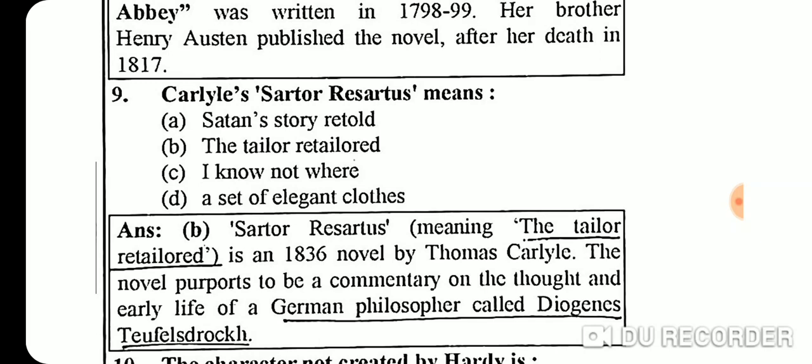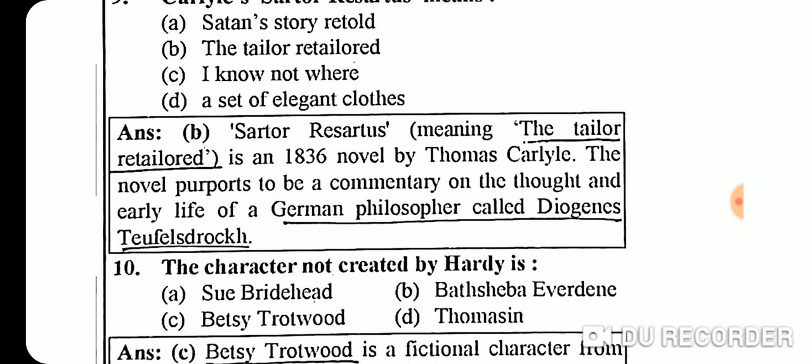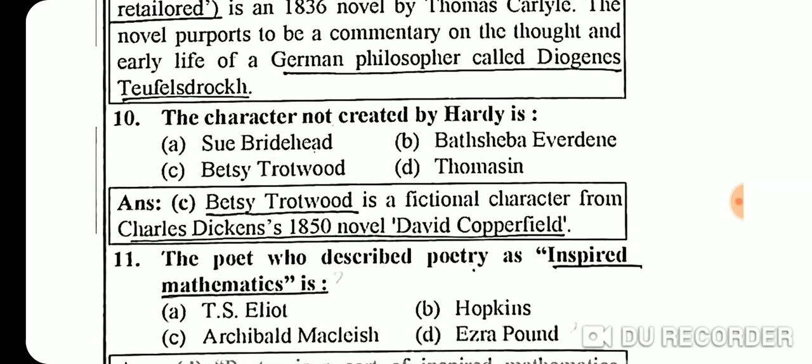Question 9: Carlyle's 'Sartor Resartus' means 'The Tailor Retailored.' Sartor Resartus is an 1836 novel by Thomas Carlyle. The novel purports to be a commentary on the thought and early life of a German philosopher called Diogenes Teufelsdröckh.